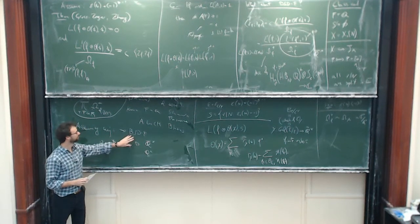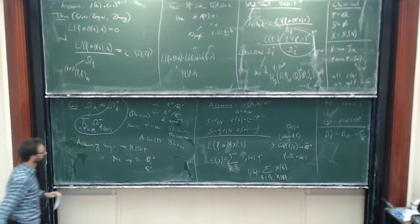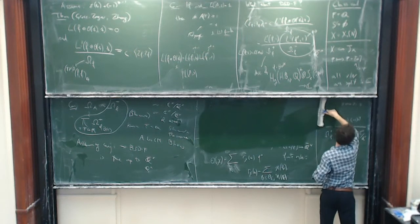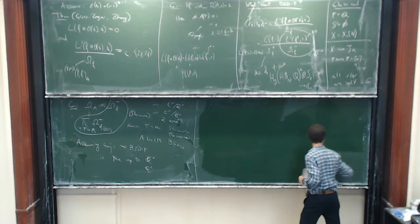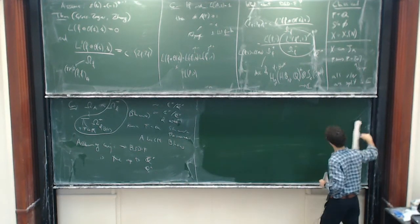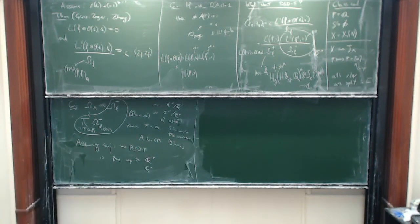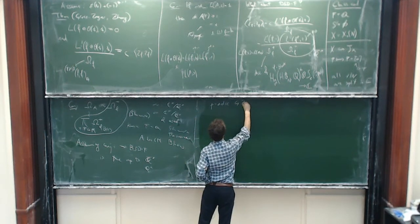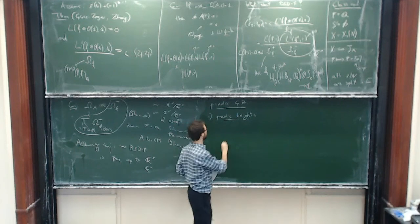Of course, in order to even start, you need to consider p-integrality properties of an algebraic number, otherwise things don't quite make sense. The p-adic analog will relate the p-adic height of Heegner points with the derivative of a p-adic Rankin-Selberg L-function. I should tell you what each of the two things is.